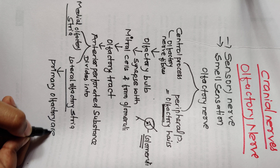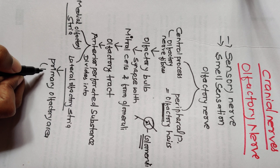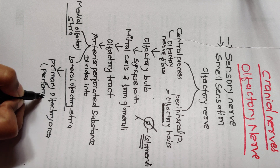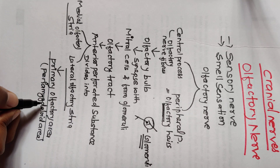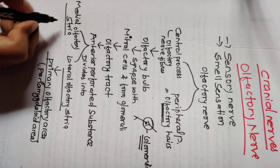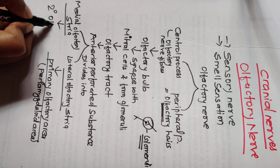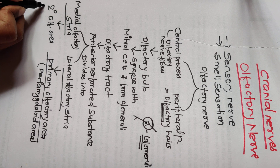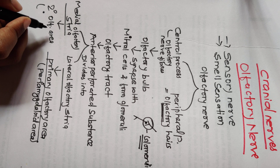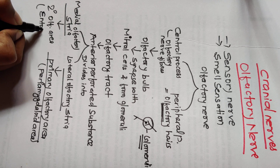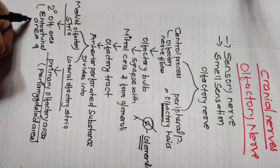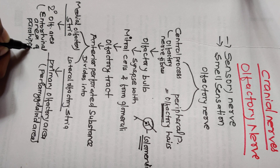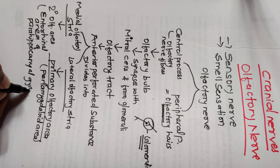The lateral olfactory stria terminates at the primary olfactory area, where the sensation of smell is perceived. This primary olfactory area is present near the amygdaloid body, in what is called the peri-amygdaloid area. The medial olfactory stria reaches the secondary olfactory area, which is present near the entorhinal area of the parahippocampal gyrus.